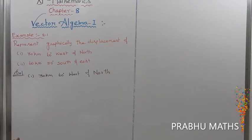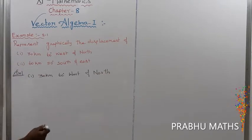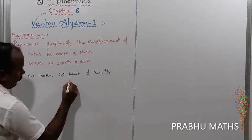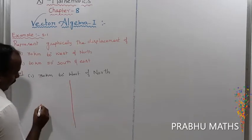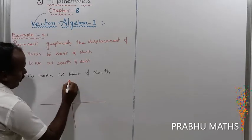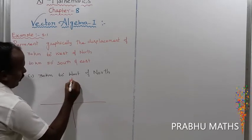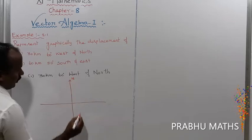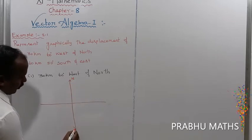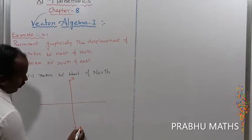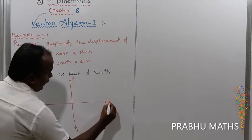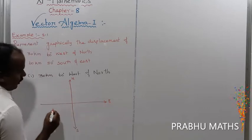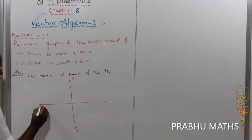First of all, let us take the graph sheet. On the graph sheet: this direction is north, this one is south, this one is east, and this one is west.